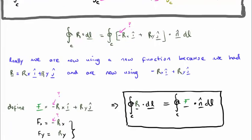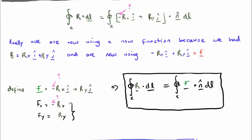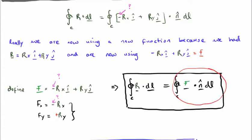Really, however, we are now using a new function. Because we initially started out with R = R_x î plus R_y ĵ, but now we are using one which is minus R_x î plus R_y ĵ. So it's a different function — let's give it a new name. We're going to call this F. This is a new vector field F. The point here is that F_x is minus R_x — the signs are very important — and F_y is plus R_y. If we write it this way, we can rewrite the closed line integral of R dot dl as the closed line integral of F dot n̂ dl.